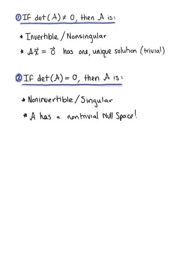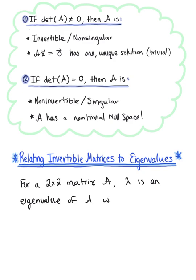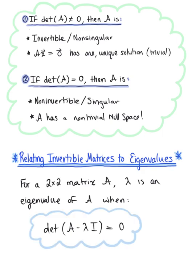With this second case, we are ready to relate the ideas of invertible matrices to eigenvalues. We can say that for a 2 by 2 matrix A, lambda is an eigenvalue of matrix A when the determinant of matrix A minus lambda times the identity matrix I₂ is equal to 0. As we progress through our explorations of eigenvalues and eigenvectors, we'll see that this same idea holds true for n by n matrices as well.